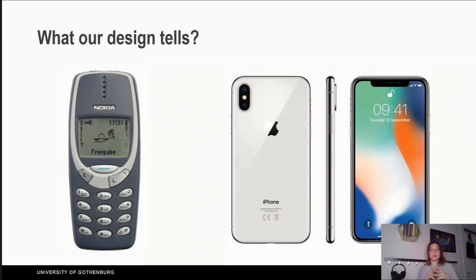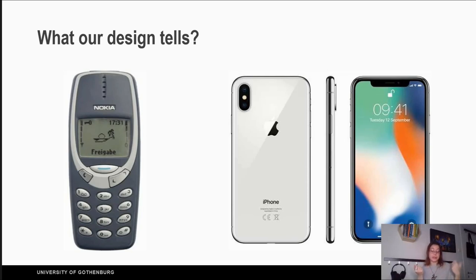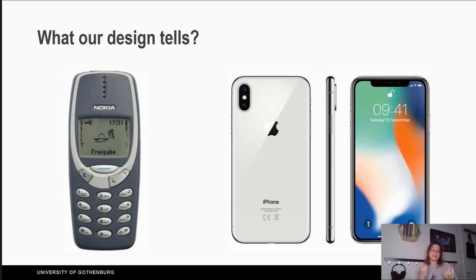We need to think about our designs because they speak for themselves. For example, this Nokia phone model seems concrete — it looks like it can last long, and if it falls, it won't be a big issue. While an iPhone looks really thin and fragile, almost as if it's made of glass. So we handle different things based on their design and looks.